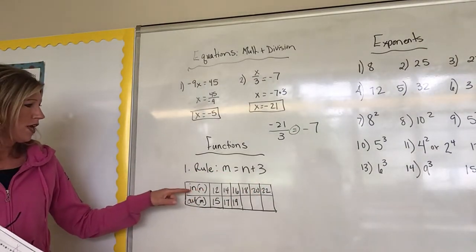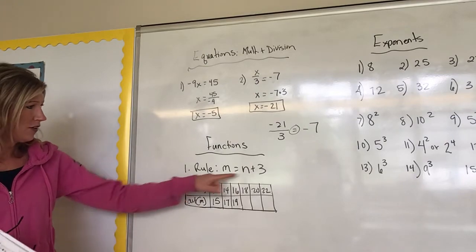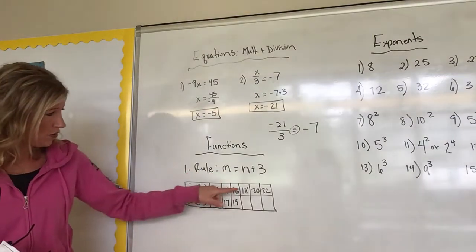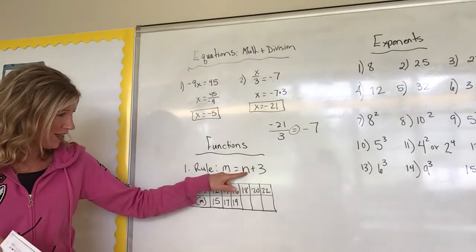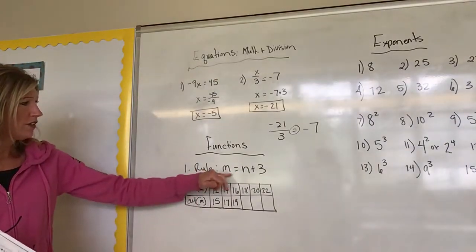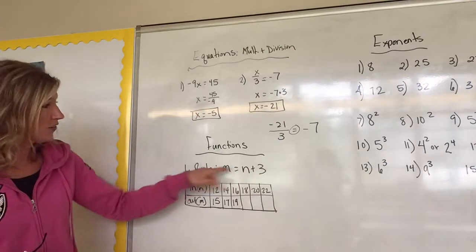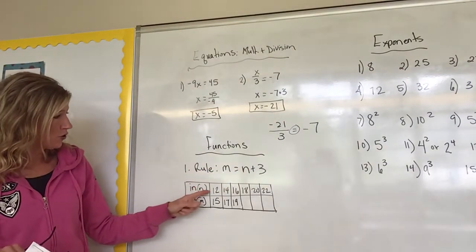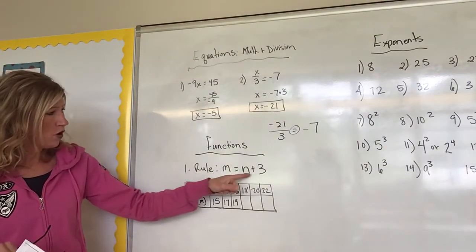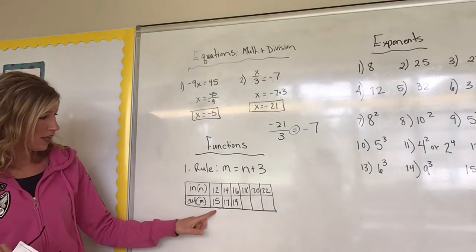Where we have rules, m equals n plus 3. Now we're going to see a box, they're actually going to give it to you. N is n, so that's where we put that, we would put these numbers right here for n. Then what does that give us? Remember we talked about input output, x and y.